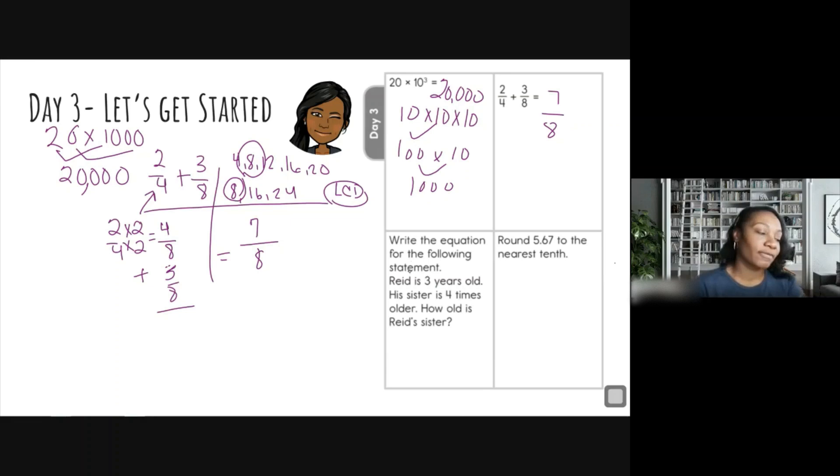It says, write the equation for the following statement. Here we go. Let's listen and we're going to write the equation. So Reed is three years old. All right, Reed is three. Okay, let me erase that and write it a little better. Okay, so Reed is three years old.